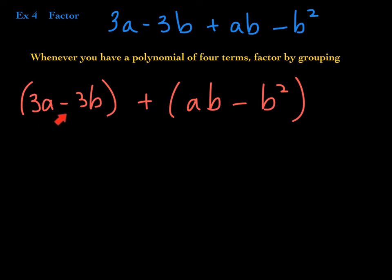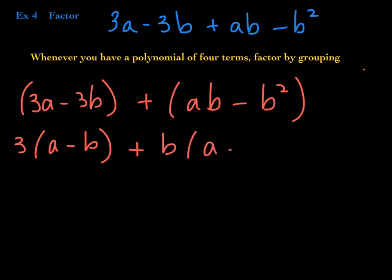The next step in factoring by grouping is to factor out the GCF from each group. From the first group, both terms share a 3 — so factor out 3. From the next group, both terms share a B — so factor out B. The sign that you're on the right track is that this binomial factor matches this one — those two binomial factors look exactly the same.